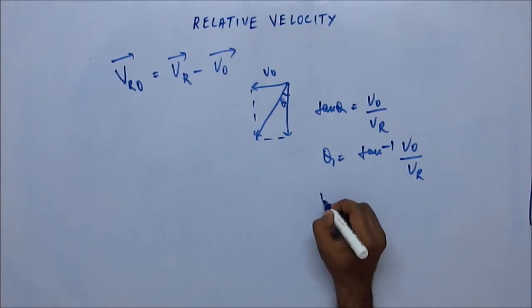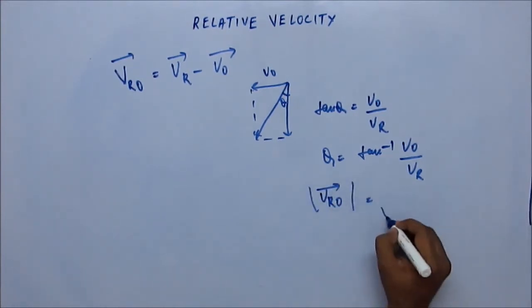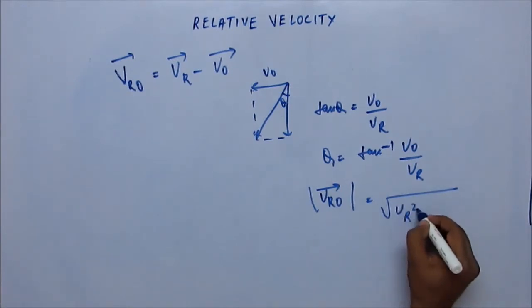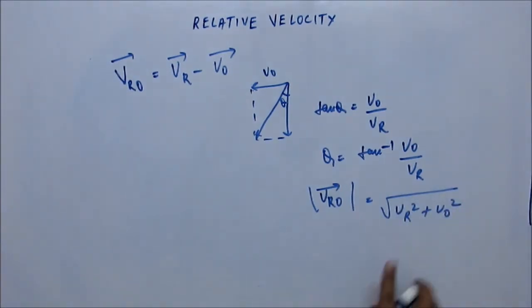And the magnitude of relative velocity of rain with respect to observer would be root over VR squared plus VO squared. That is easy, coming from vectors.